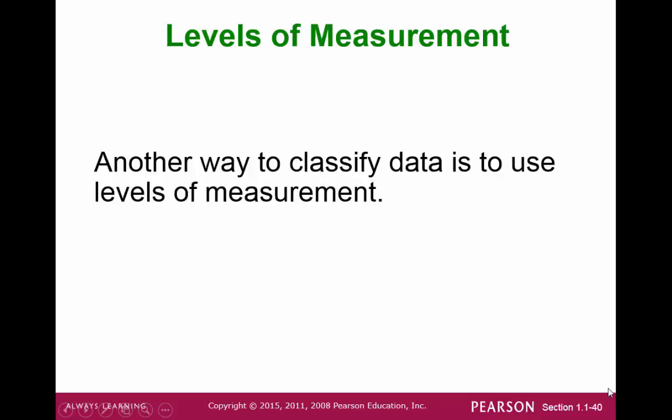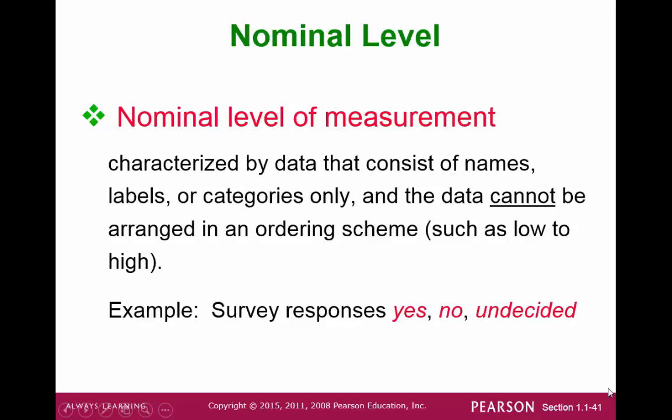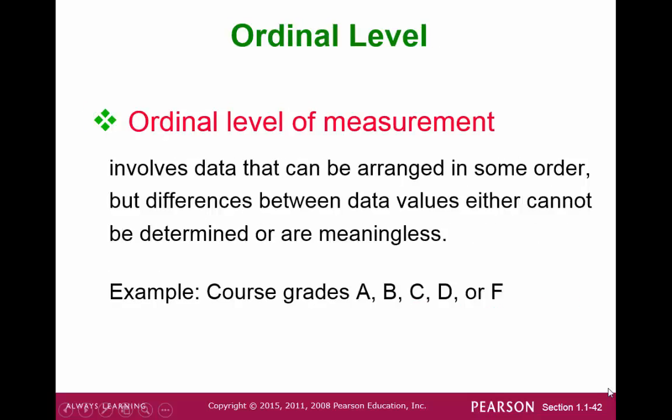We can further break down the different data with levels of measurement. A nominal level of measurement is characterized by data that consist of categories or names, and the data cannot be arranged in any meaningful order. An ordinal level of measurement is a set of data that you can arrange in some meaningful order; however, the distances between those values may not be well defined.